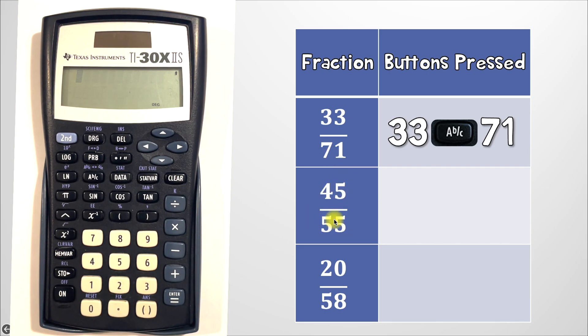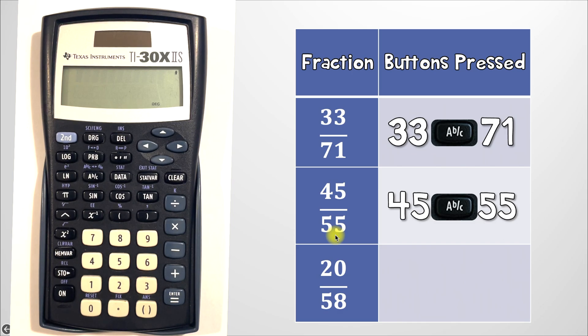Now let's go to the second example 45 over 55. So what buttons did you press? Well first you should have entered 45. Then because it's a fraction you hit the ABC button and finally you enter 55 because that's the denominator. So let's do that all together now.